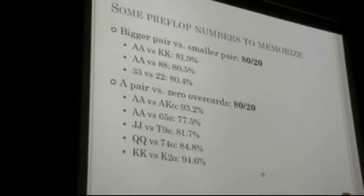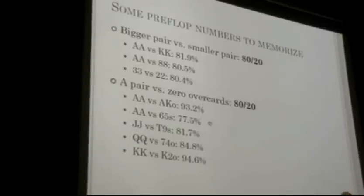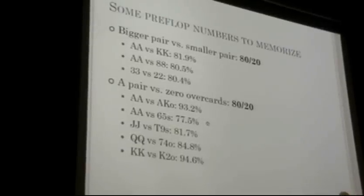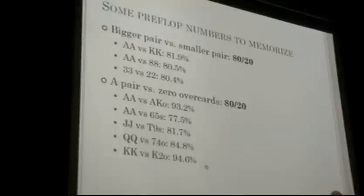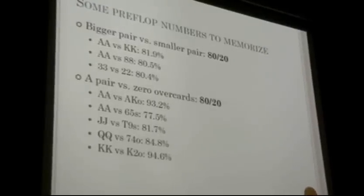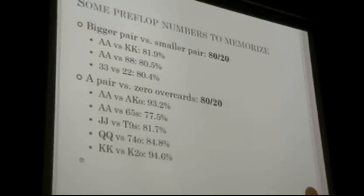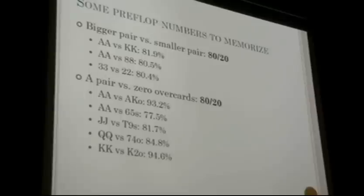Here are two trivia facts. The hand that does best against pocket aces is 6-5 suited at 22.5%, better than any other hand. And the highest equity you could possibly have getting it all in pre-flop is pocket kings against king-2 offsuit at 94.6% — not pocket aces against ace-2 offsuit, because ace-2 can hit a straight needing only three more cards.